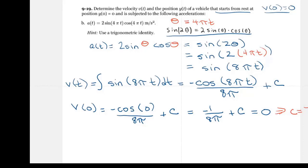Just solve for C. Now we have our velocity function. V of T is equal to negative cosine of 8π T over 8π plus 1 over 8π. And that's how we use our information. Now we need to find Y, our position function. If we're given information about where it starts, we can always find C. Otherwise, we just put plus C.